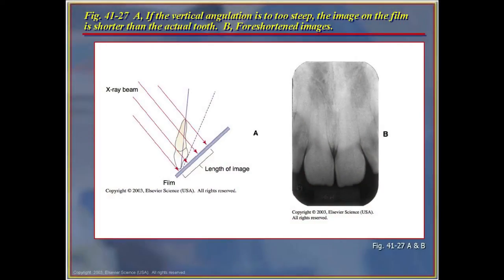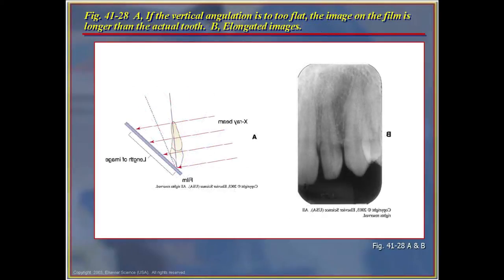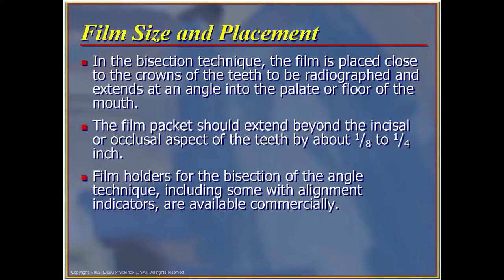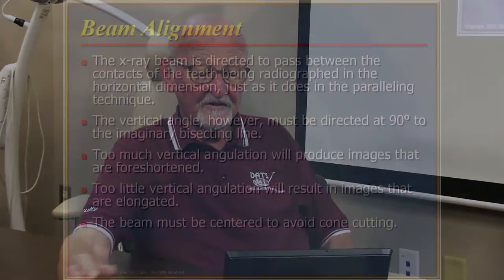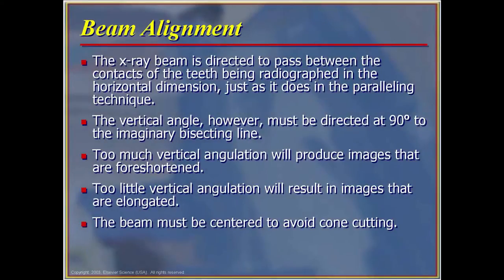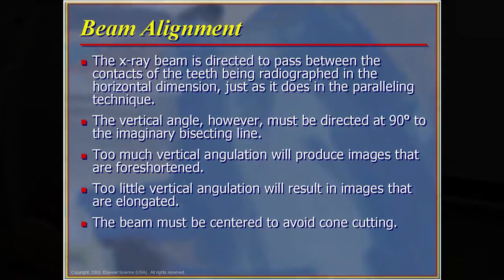In the bisecting technique, the film is placed as close to the crowns of the teeth as possible and extends at an angle to the palate or roof of the mouth. The film package should extend beyond the incisal or occlusal aspect of the teeth by about one-eighth to one-quarter inch — this applies to digital sensors as well. Film holders for the bisecting angle technique with alignment indicators are available commercially. The x-ray beam is directed to pass between the contacts of the teeth in the horizontal dimension, just as in the paralleling technique. The vertical angle must be directed at 90 degrees to the imaginary bisecting line to give an x-ray as close to the appropriate angulation as possible.